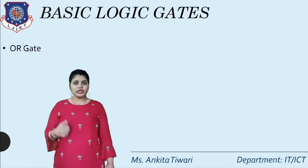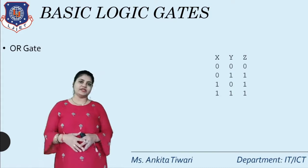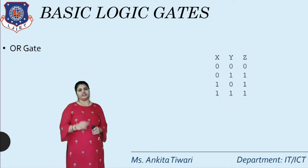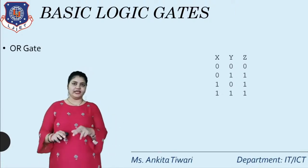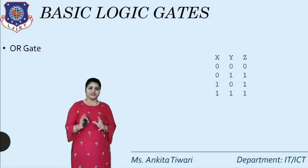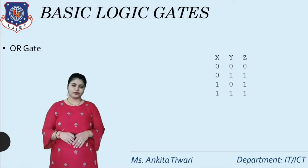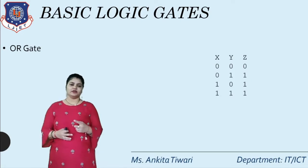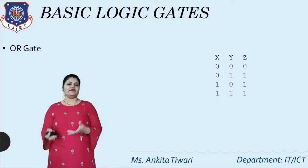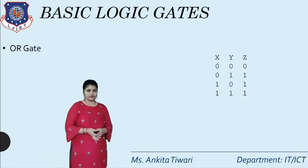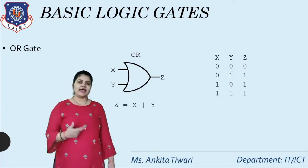The next basic gate is the OR gate, which uses a plus operator in logical terms. If any of the values is 1, the answer is 1. For two variables X and Y with 4 possibilities: 0+0 = 0 (neither value is true); 0+1 = 1; 1+0 = 1; 1+1 = 1. The symbolic notation is shown, and the equation is X OR Y.